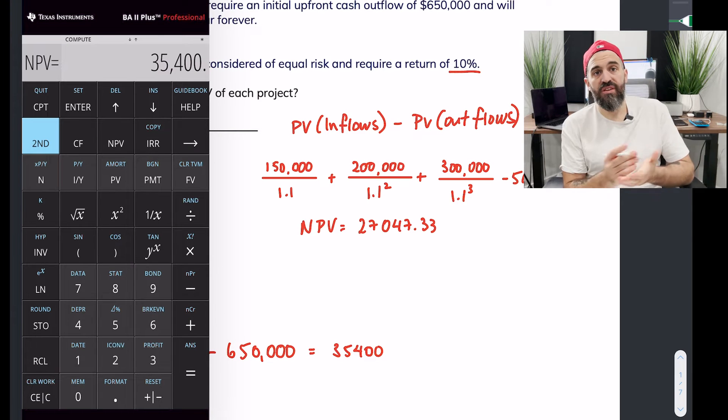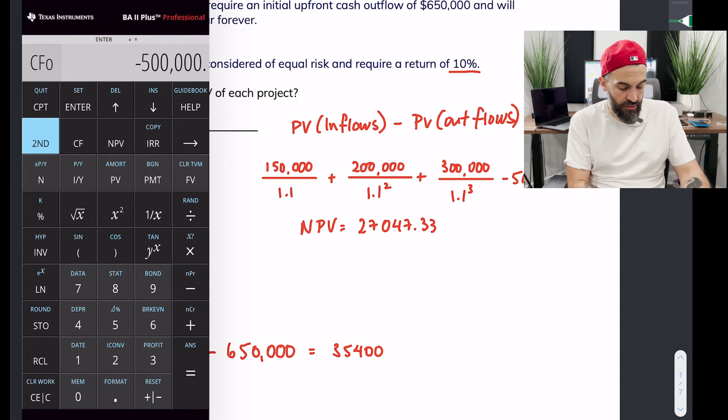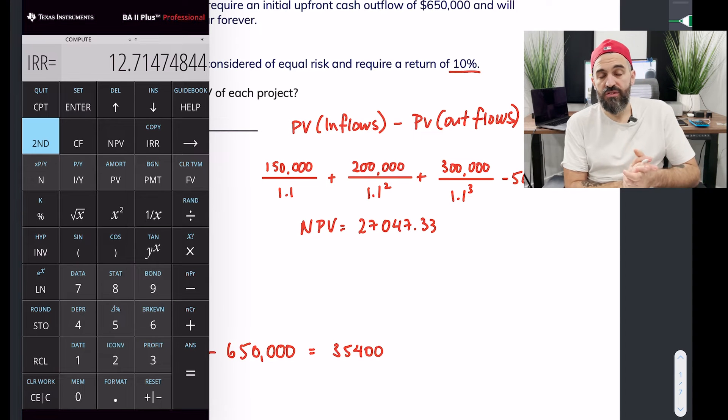For the internal rate of return you'll take your financial calculator and plug in the cash flows. We'll start cash flow first one is negative $500,000 enter down, $150,000 in the first year enter down down, $200,000 and then $300,000, IRR compute. So you'd end up with an internal rate of return for the first project, the Omega project, of 12.71%.